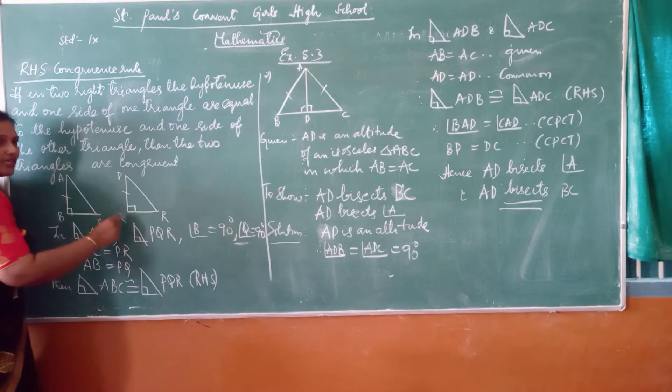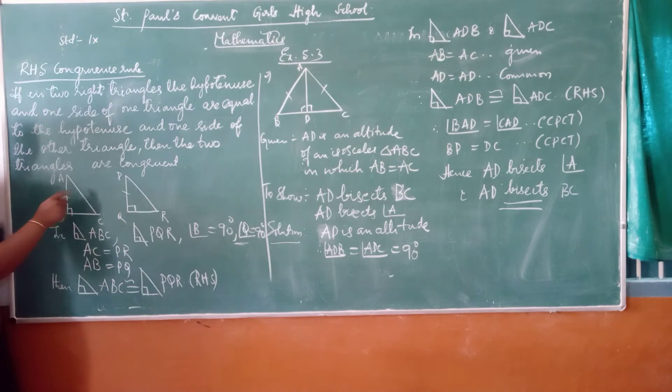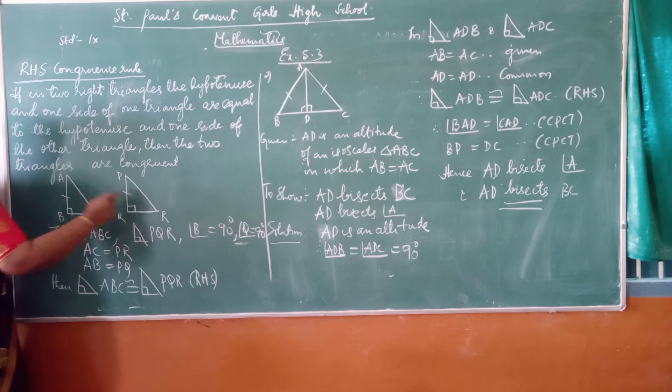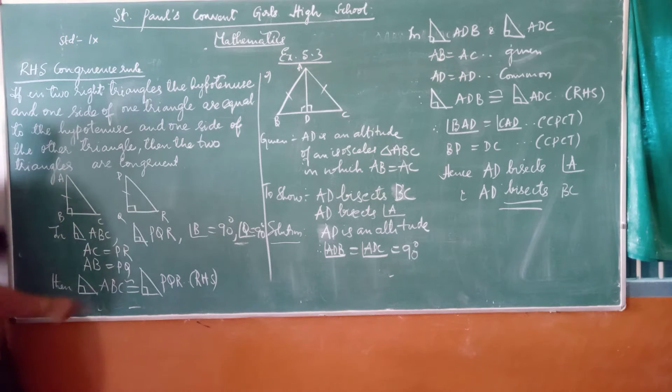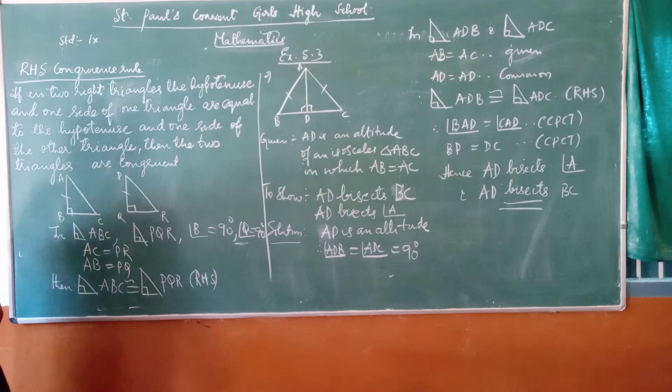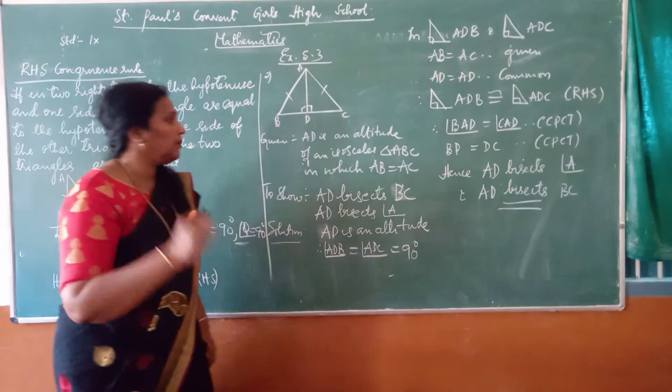So in right angle triangle ABC and right angle triangle PQR, AC is equal to PR, AB is equal to PQ, therefore the two triangles are congruent. Based on this, there is a problem. It says 5.3, second problem.